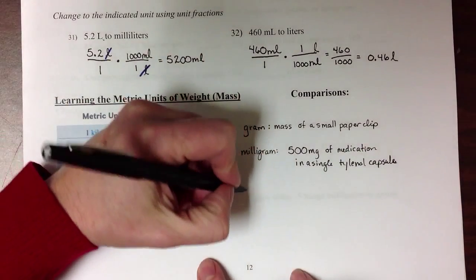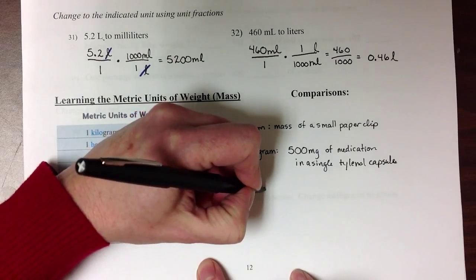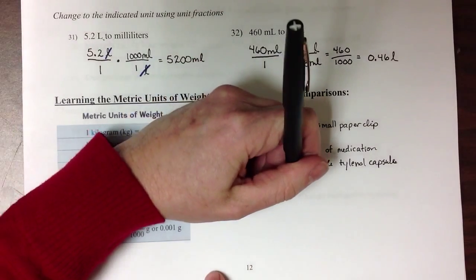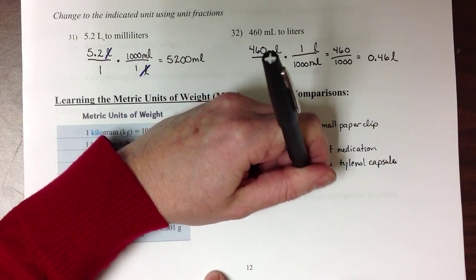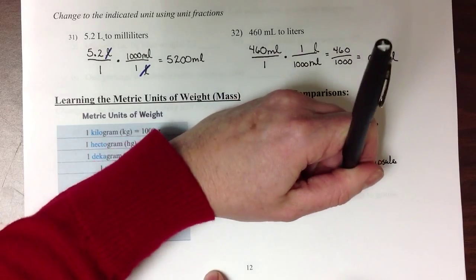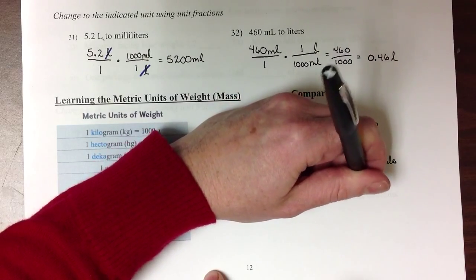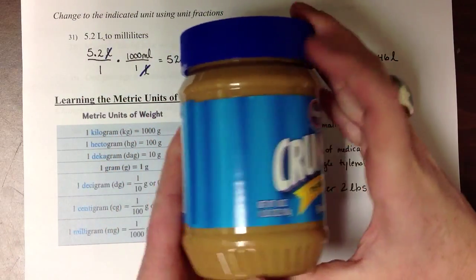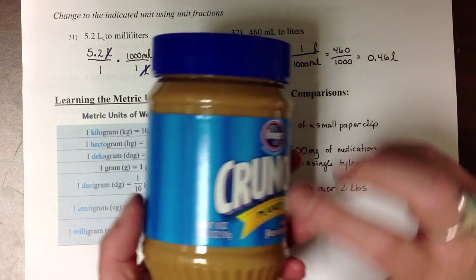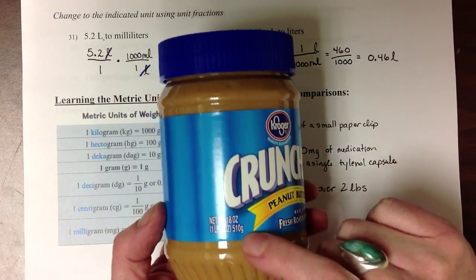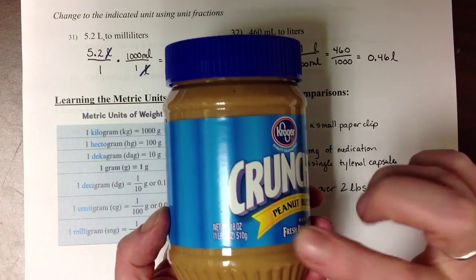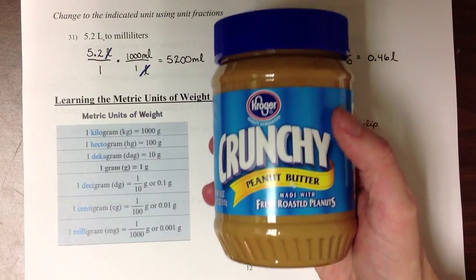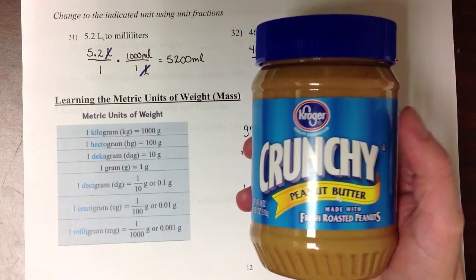The other one that we'll see quite a bit is the kilogram. Now a kilogram is a little over two pounds. So this jar of peanut butter weighs 18 ounces, two ounces more than a pound, and it weighs 510 grams. Since there are a thousand grams in a kilogram, it would take just a little less than two of these jars of peanut butter to be the equivalent of a kilogram.